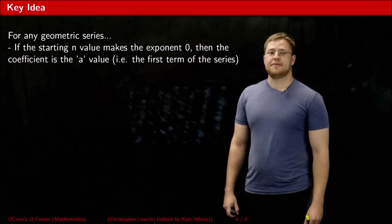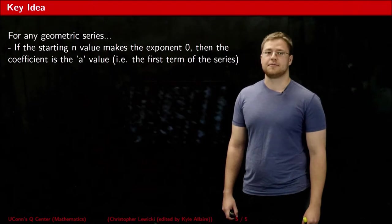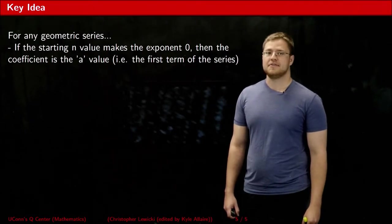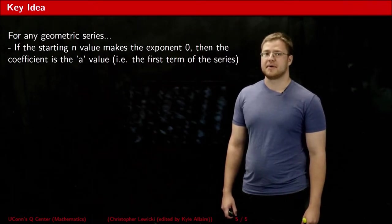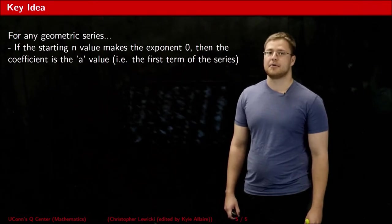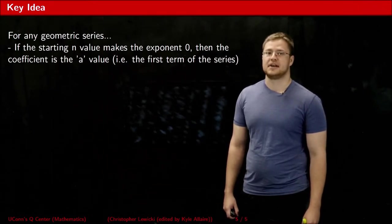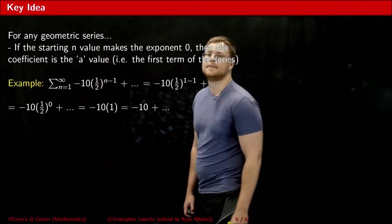Whenever you're trying to figure out if you need to calculate your a value, or if the a value has been given to you as the coefficient of the r part, what you have to do is first look at the lower limit of your series, and then look at your exponent. If the lower limit, aka your starting value for n, makes your exponent 0, then the coefficient is your a value. Let me illustrate that fact with an example.